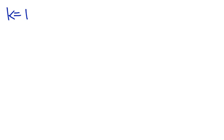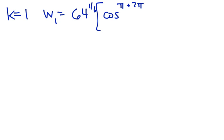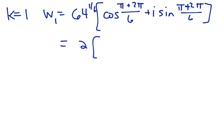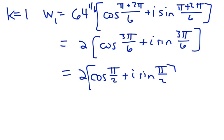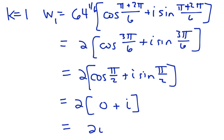For k = 1: 64^(1/6) = 2, then cos((π + 2π·1)/6) + i·sin((π + 2π·1)/6) = cos(3π/6) + i·sin(3π/6) = cos(π/2) + i·sin(π/2). Cos(90°) = 0 and sin(90°) = 1, so the second root simplifies to 2i.